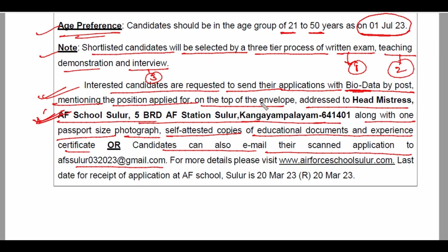Selection ka jo process hai wo three phase mein conduct karvai jayegi। Yahan official email address mention kiya gya hai jahan candidate apne application format ki scan copy ya soft copy is email ID par bhej sakta hai। Official website mention ki gayi hai jahan se detail notification check kar sakte hain। Last date of application is 20th of March।